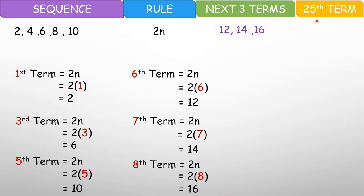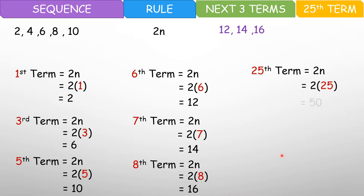So the next 3 terms — after ng 10 is 12, 14, 16. Now, for the 25th term — kung nagbibilang ka, nag-skip counting ka, matagal pa yun. Pero dahil alam mo na yung rule, apply mo lang yung rule and makakuha mo na yung sagot. So that would be the 25th term, that is equal to 2n. Multiply natin ang 2 with 25. Sagot natin is 50. So 25th term is 50. Ganun siya kadali kung alam mo na yung rule.